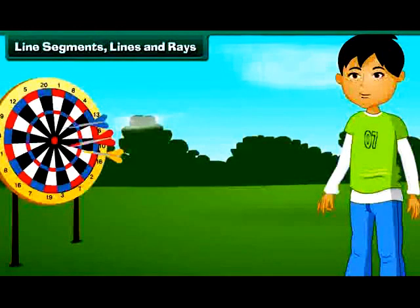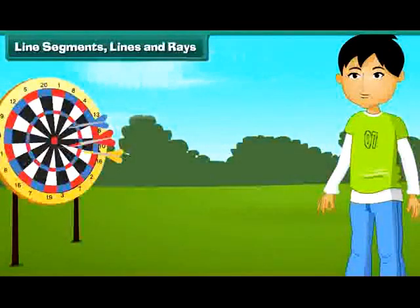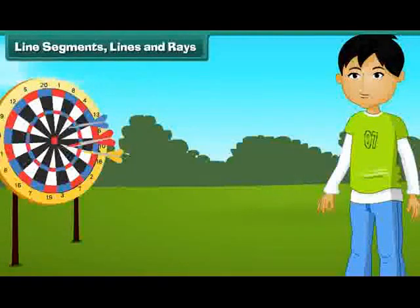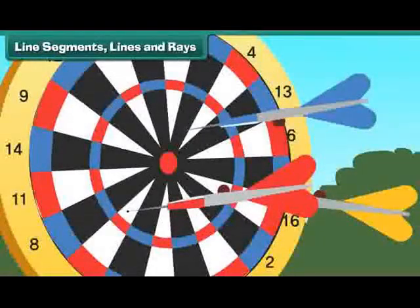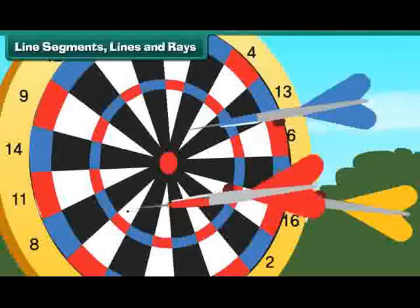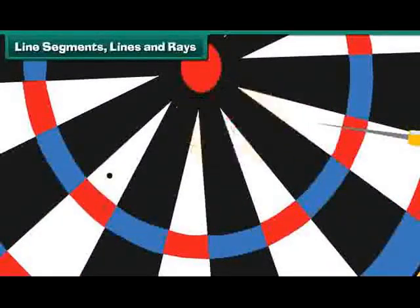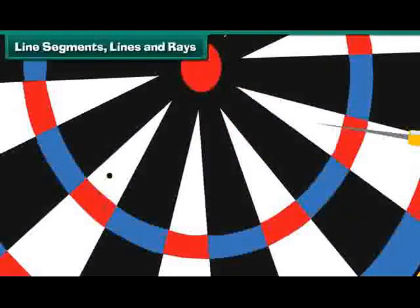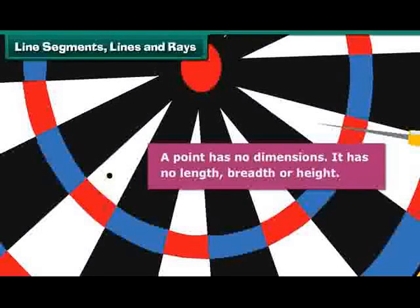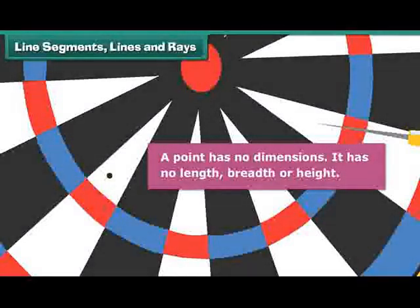Rahul perfects his aim by throwing darts at the dart board. Here is one such dart. Let us remove it. What do we observe? The dart has left a mark on the dart board. The mark is called a point. A point has no dimensions. It has no length, breadth, or height.